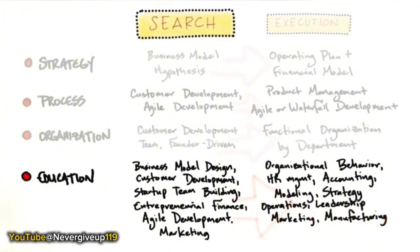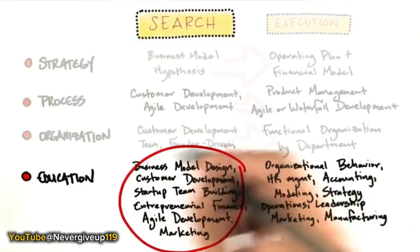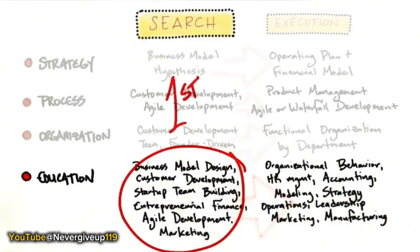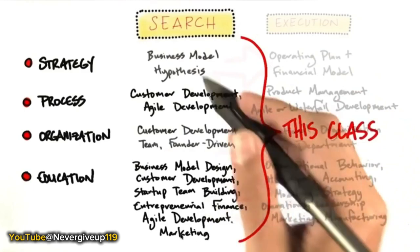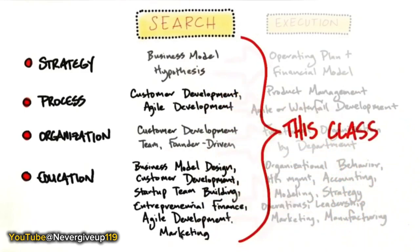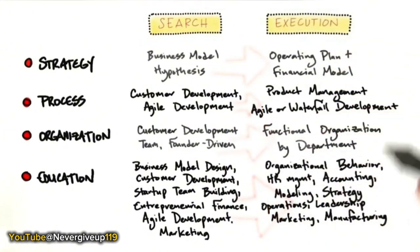What that means about entrepreneurial education is that eventually we do need you to know everything an MBA knows. Eventually, if you're successful in growing your startup into a large company, you are going to need to know about accounting and HR and organizational behavior and global leadership. But at first, you need a different set of skills that just never existed before. Welcome to the first class of its type that's going to put search first. This class is going to teach you all the skills about strategy and process and organization. We're about to get started. Let's jump into business models and customer development.